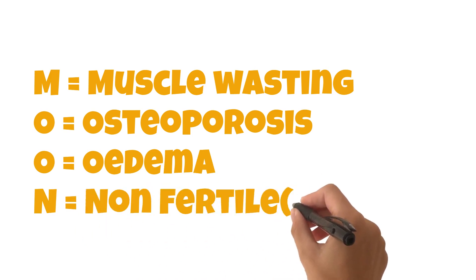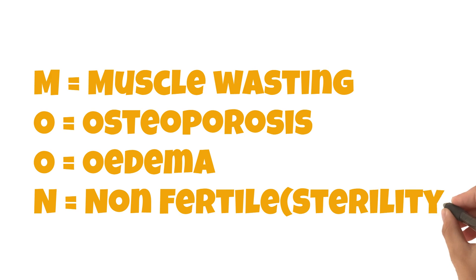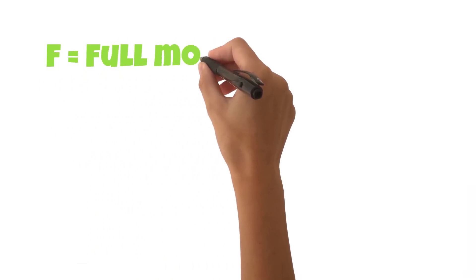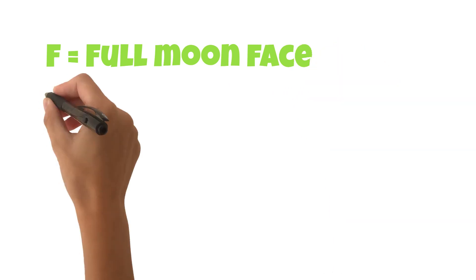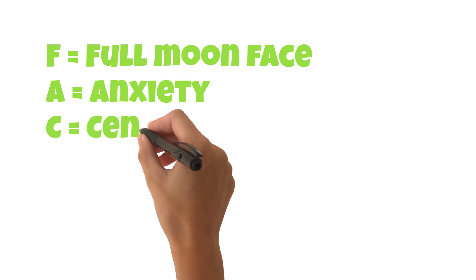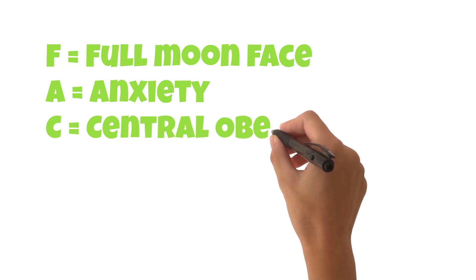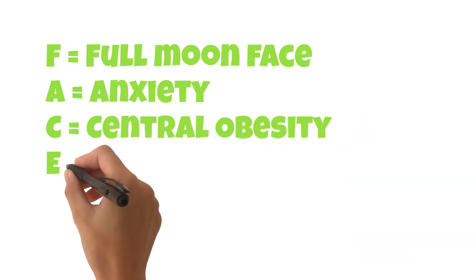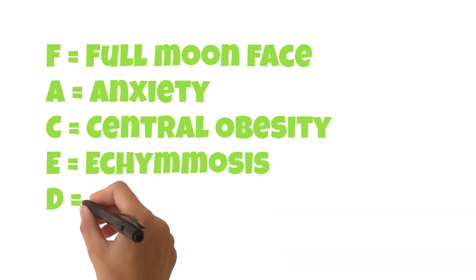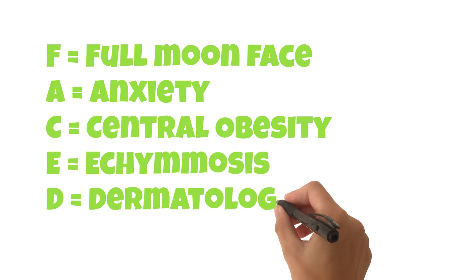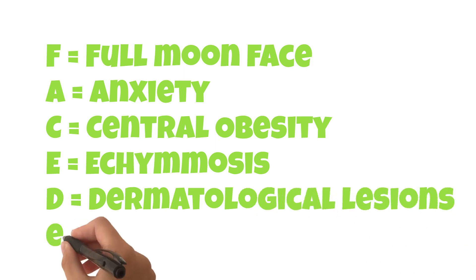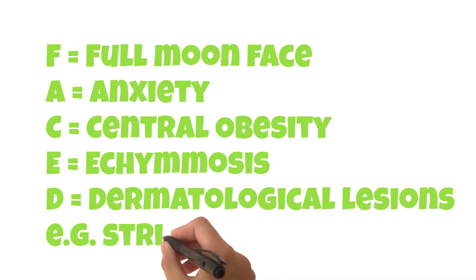Moving to FACED: N — patients can become non-fertile, i.e., sterility. F — they have a full moon face. A — they have an increased level of anxiety. C — they can get central obesity. E — ecchymosis; they are more prone to getting bruised. D — dermatological lesions such as striae. D — they have an increased tendency to be depressed and suffer from depression.